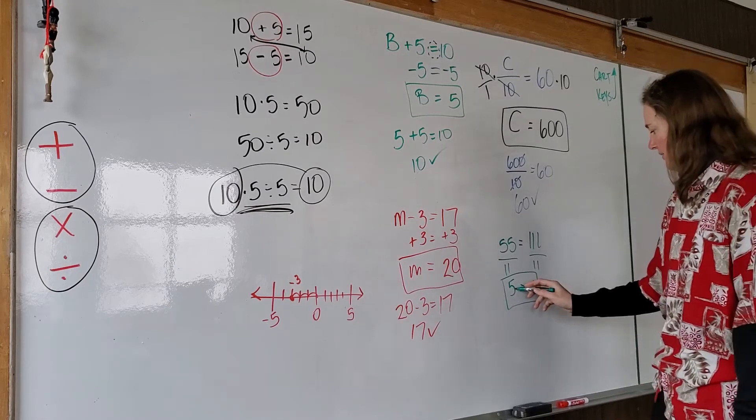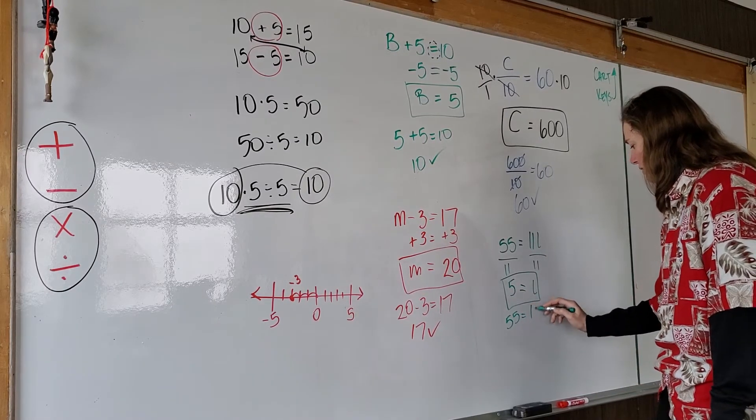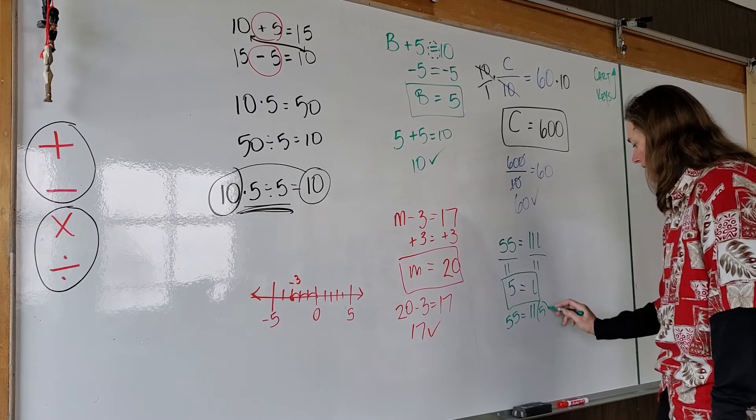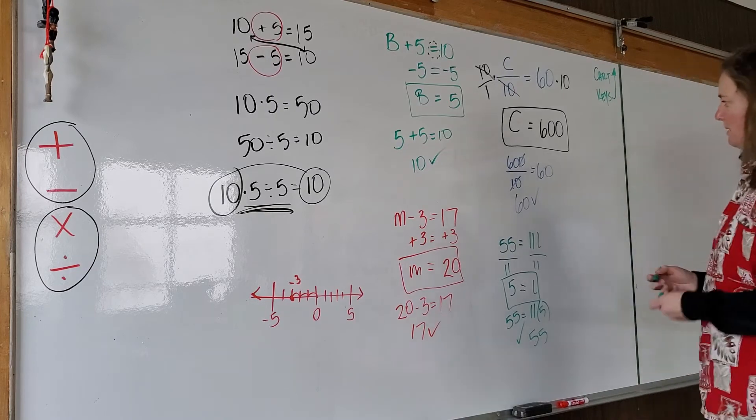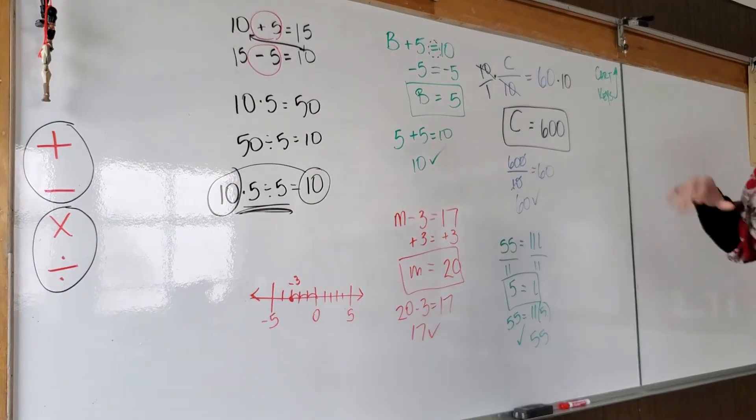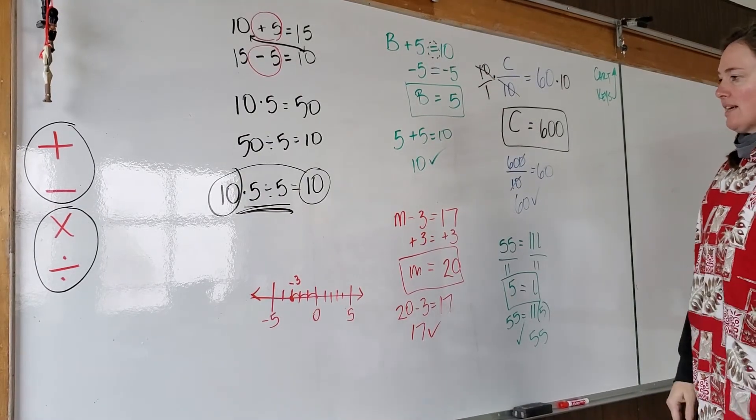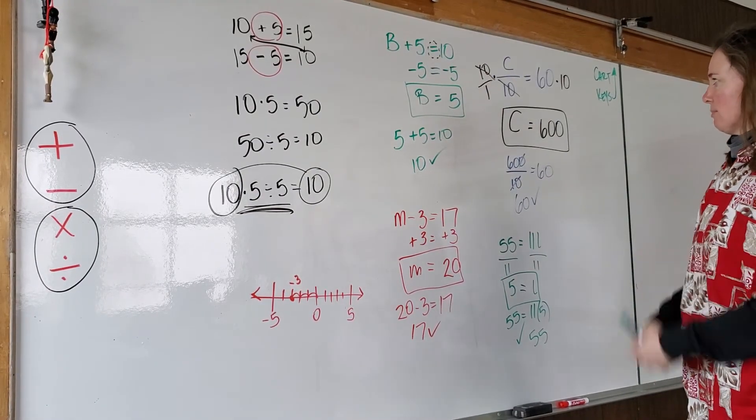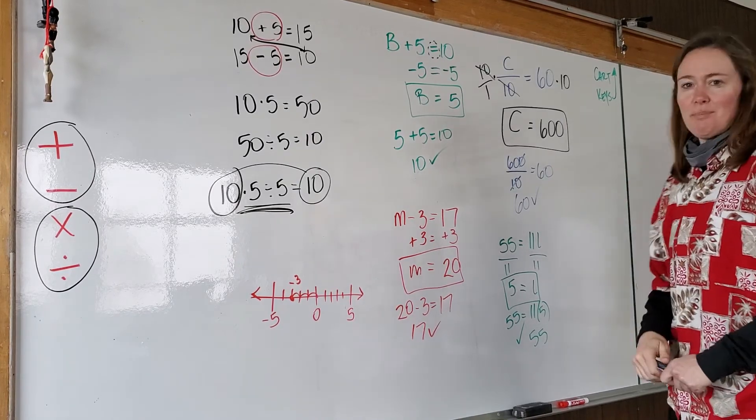And then we'll check it. Substitute the value of the variable. 5 goes in for L. So we're going to say 55 is equal to 11 times 5. 11 times 5 is 55. Okay. So today you're going to get a lot of practice on these four things. A lot of practice. How are we going to get better at stuff? We're going to practice it. Okay. Inverse operations.